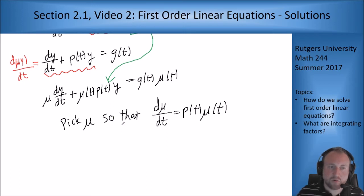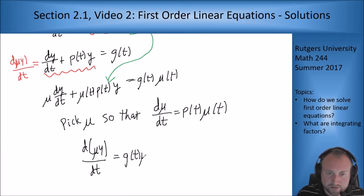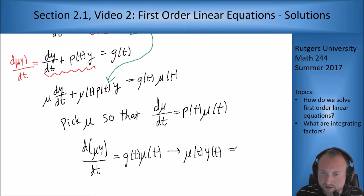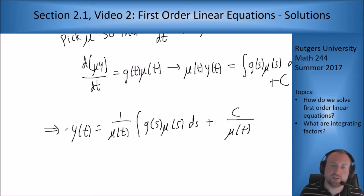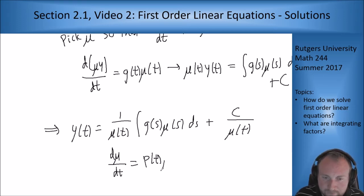So if I can do that, then what do I get? Then my left hand side just becomes d mu y/dt equals g of t mu of t. And then as before, I can just integrate both sides, integral g of s mu of s ds plus a constant. And then I can just divide both sides by mu. And that gives me a solution for the equation no matter what. I took my p, I took my g, and I can find an equation like this, where mu satisfies the differential equation d mu/dt equals p of t mu of t.